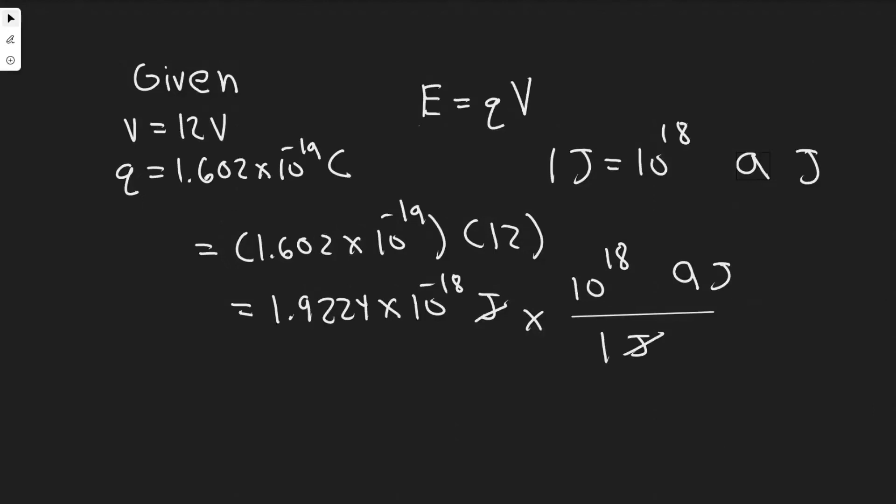So in this problem, we're told how much energy is imparted to an electron as it flows through a 12-volt battery from the positive to the negative terminal, and we're going to be expressing our answer in AttoJoules.